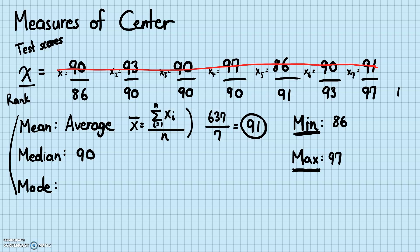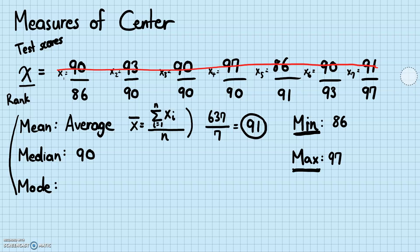If we had another number added to the data set, there wouldn't be one middle number — there would be two middle numbers. Both 90 and 91 would be the middle numbers, with three numbers on each side. This is the case when there's an even number of data: there are two middle numbers. So you find the average of those two — add 90 and 91 and divide by two. But working with our original seven numbers, the median is 90.